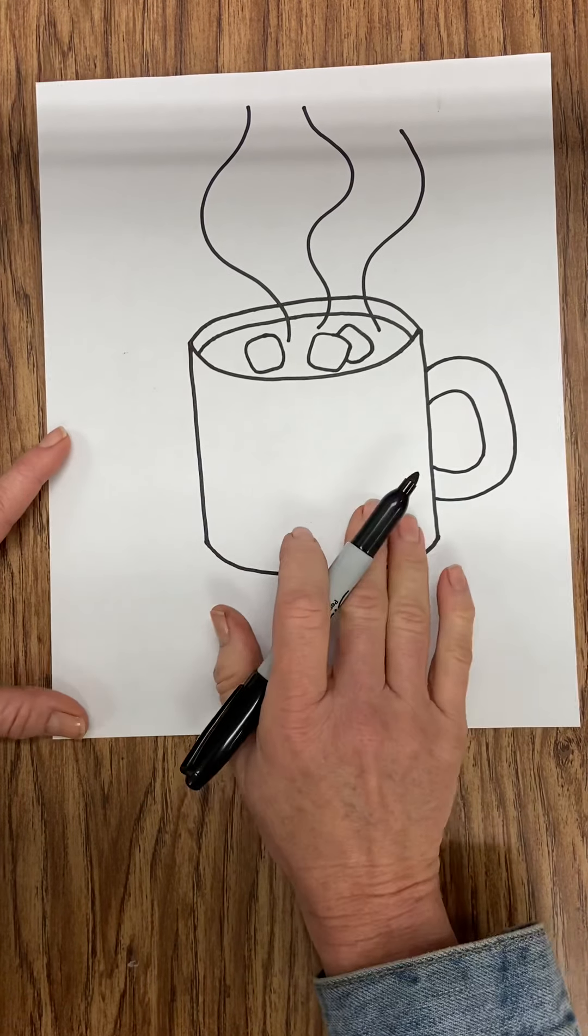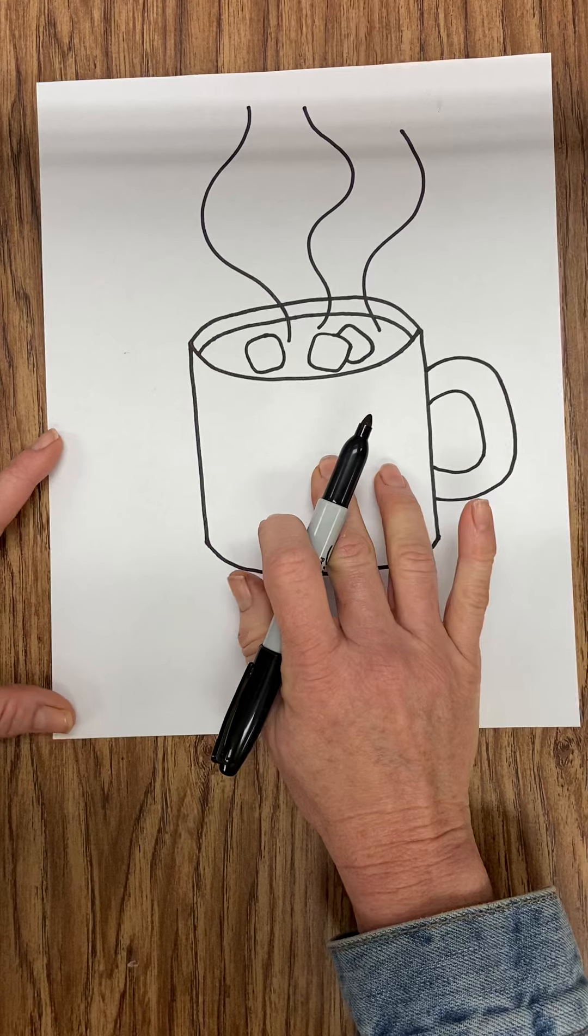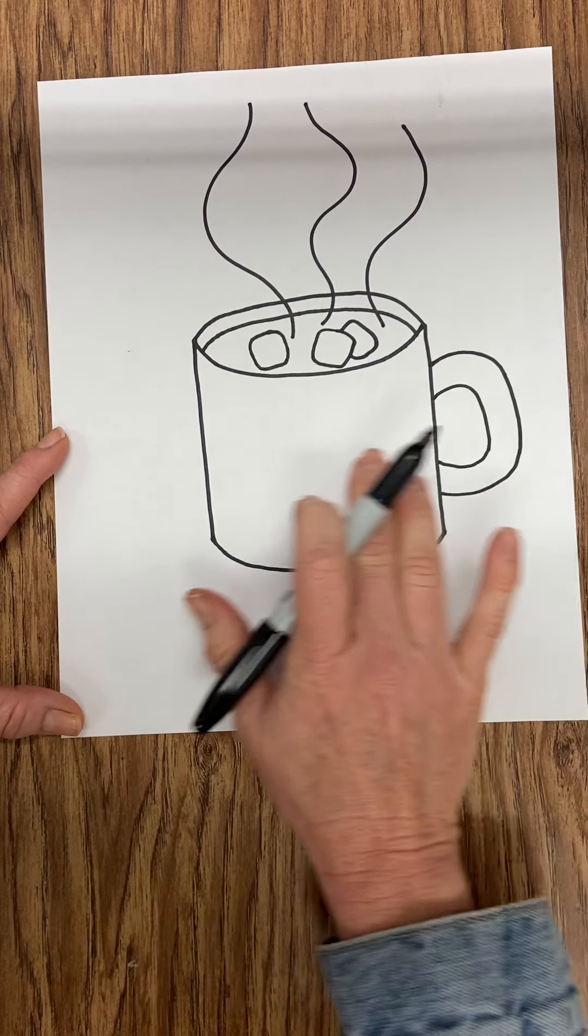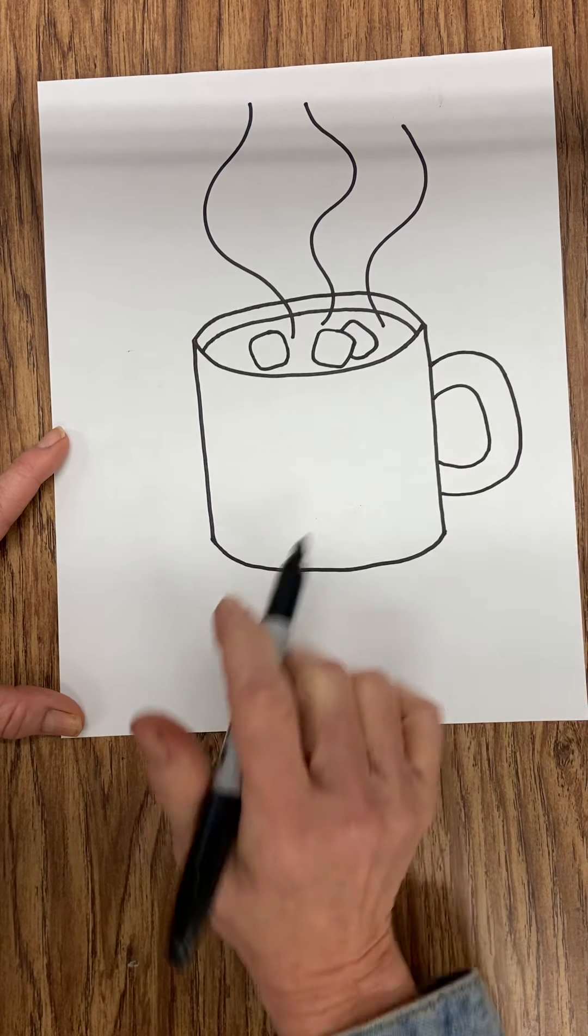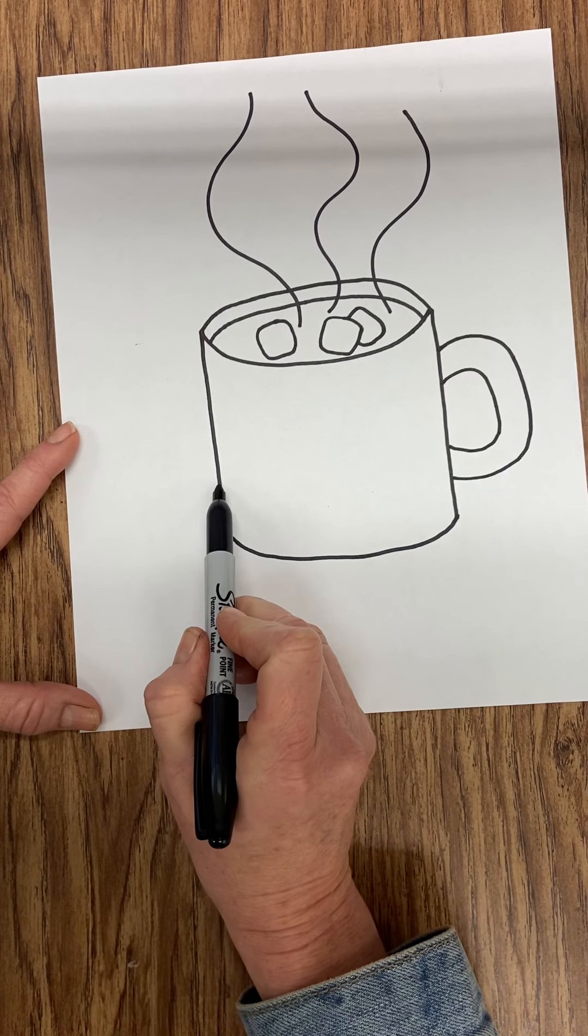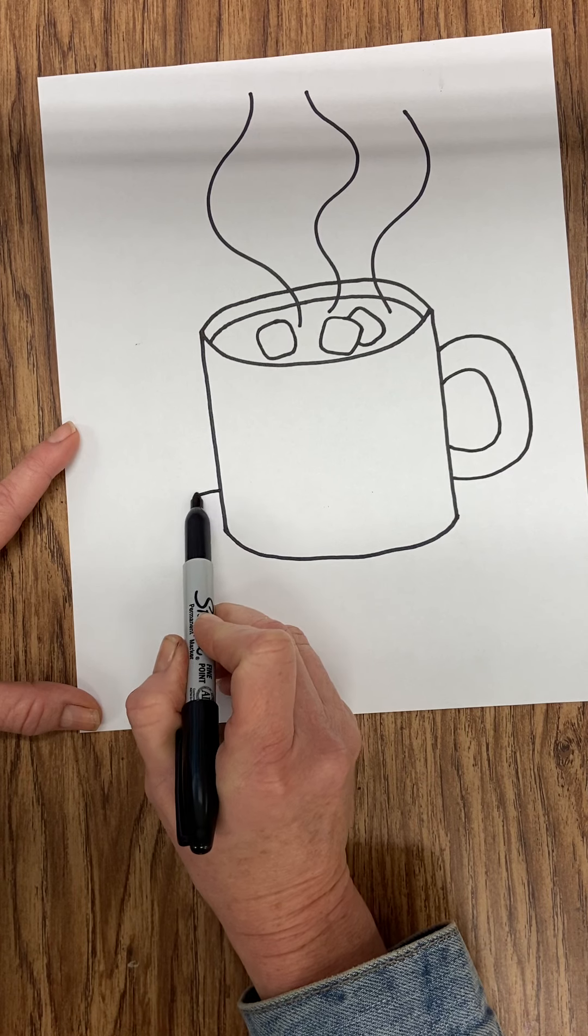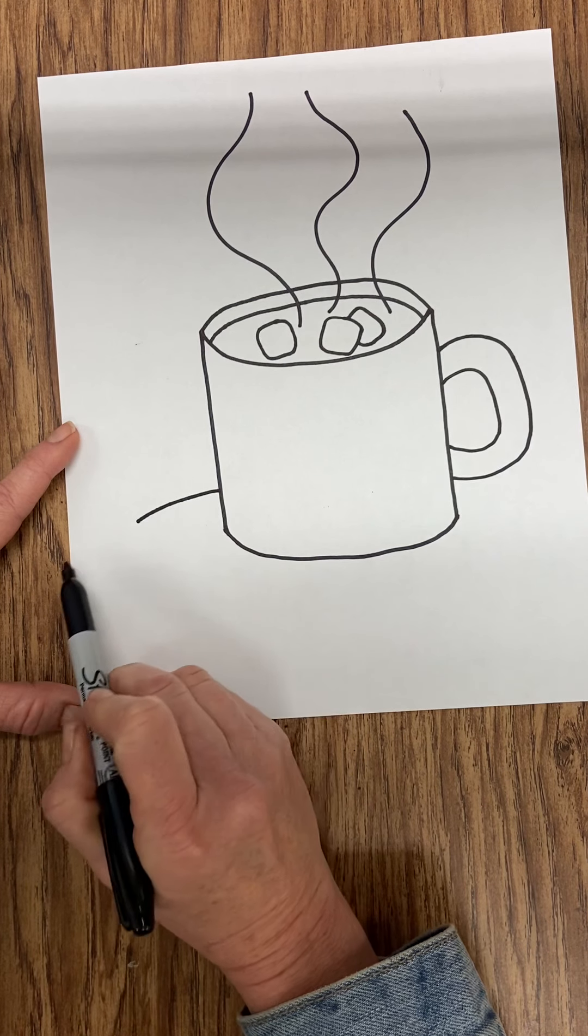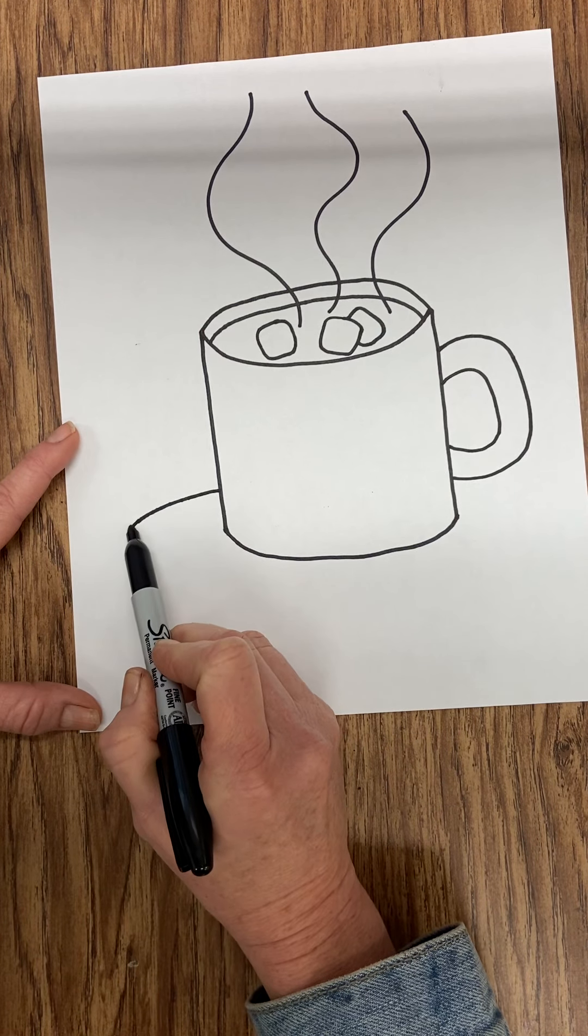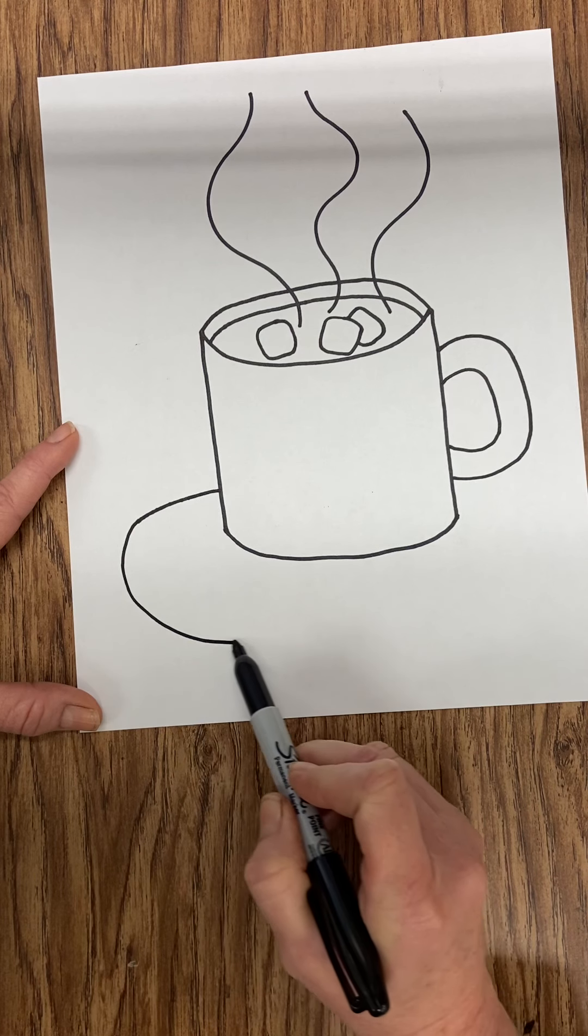Now I'm going to put my mug on a saucer. Now you're not going to see the back part of this little plate because the mug is covering it up. So start on the side of your mug near the bottom. Go over towards the side of your paper. Curve down under your mug.